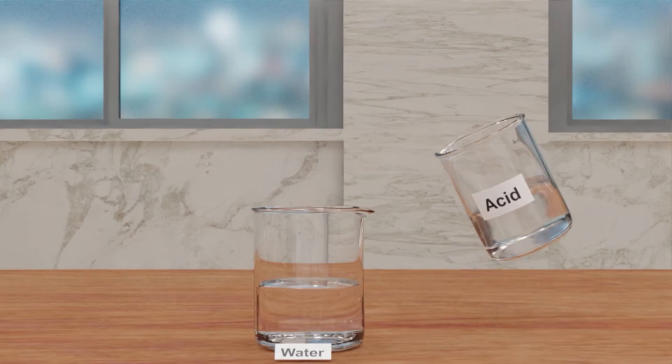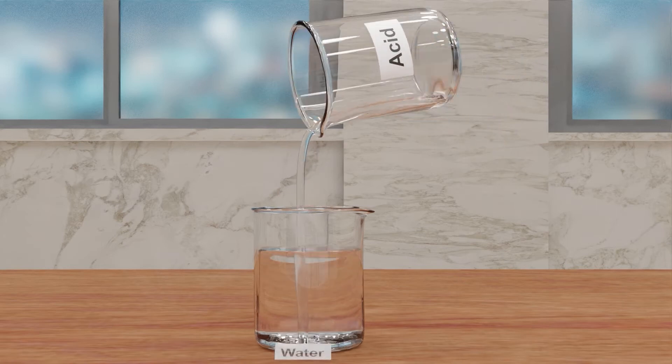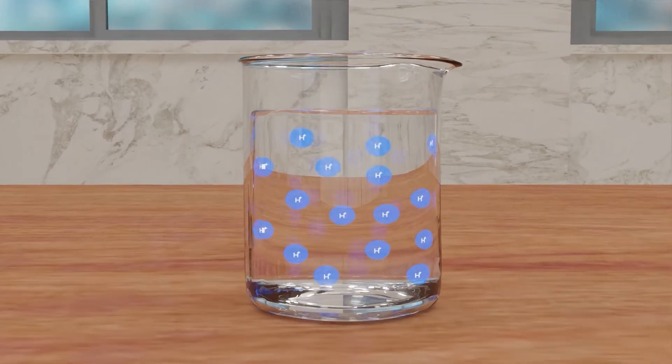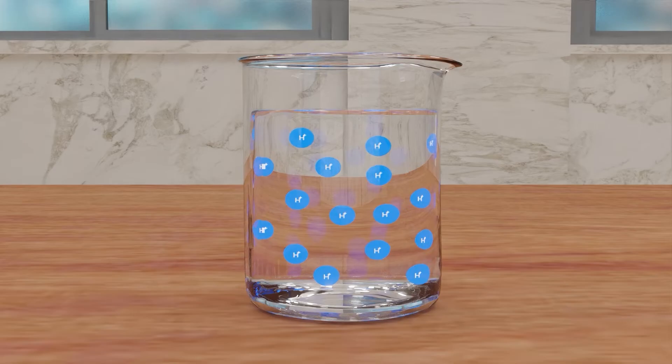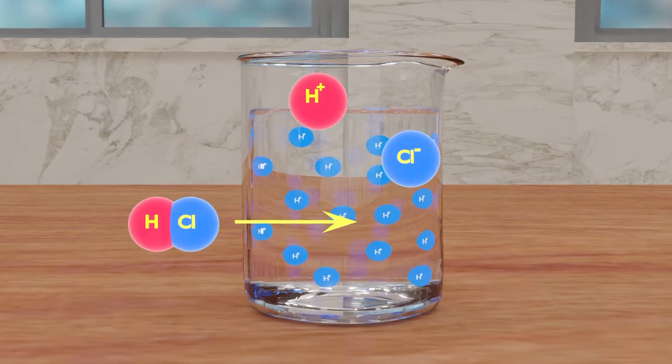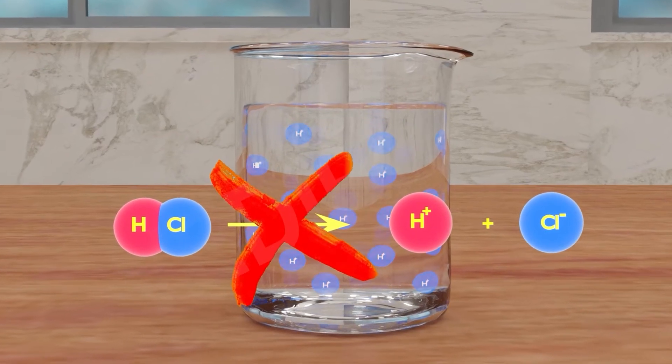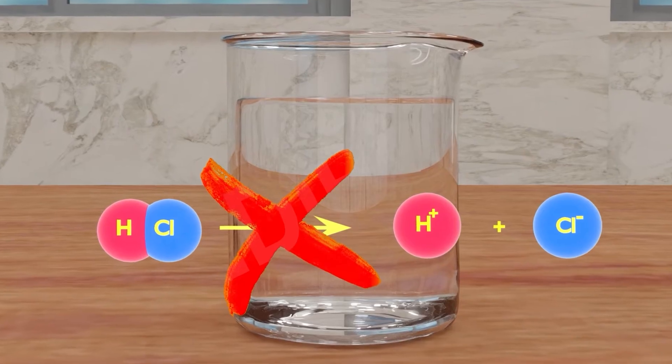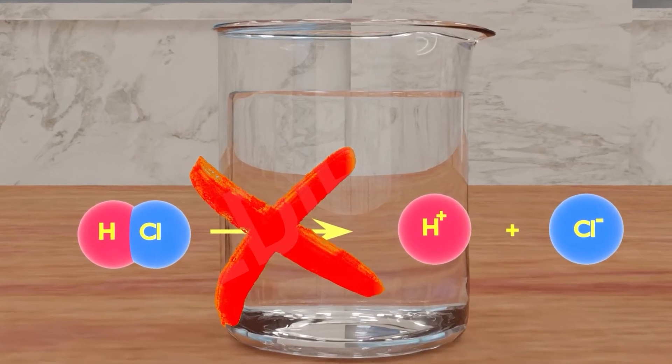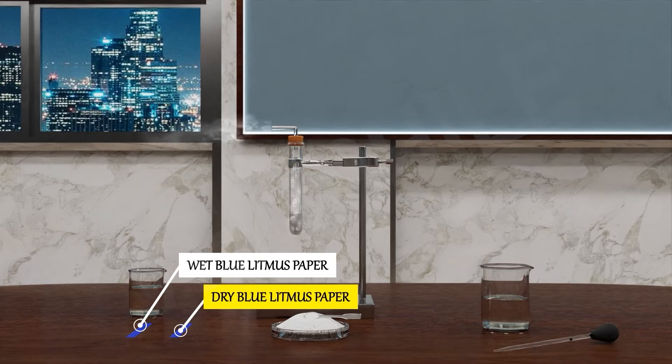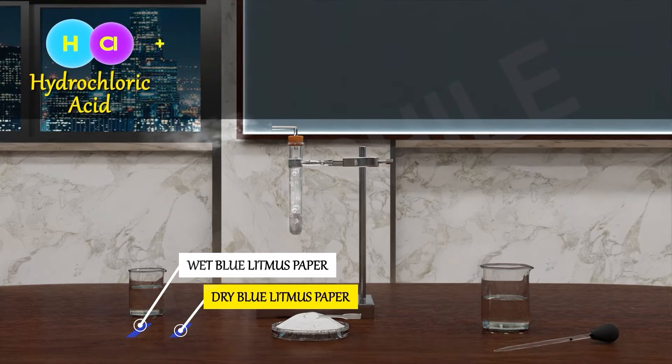In this experiment, hydrogen ions in HCl are produced in the presence of water. The separation of H plus ions from HCl molecules cannot occur in the absence of water. So if we write the reaction, we write it as HCl plus H2O.